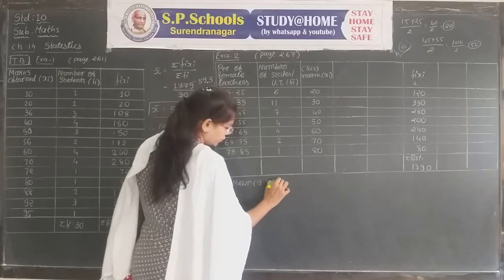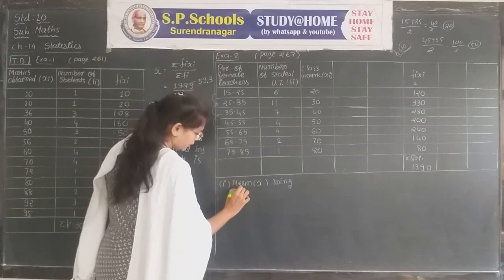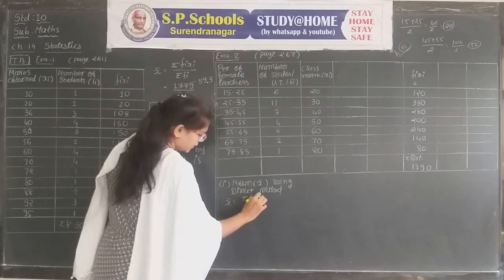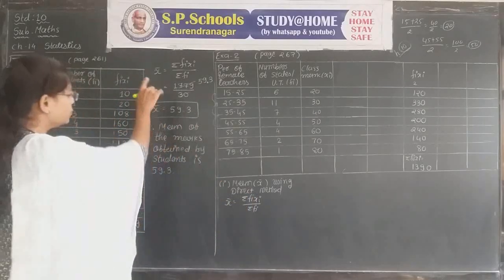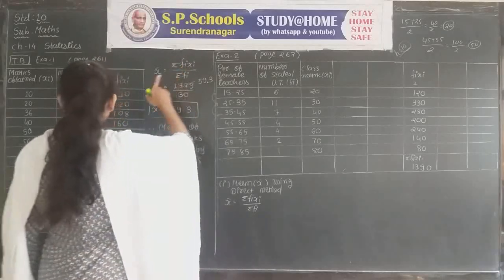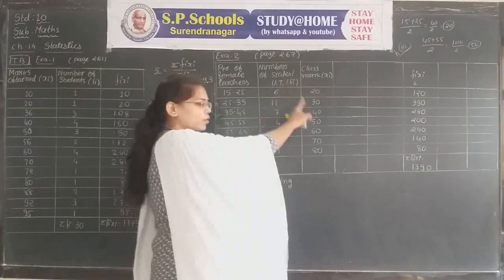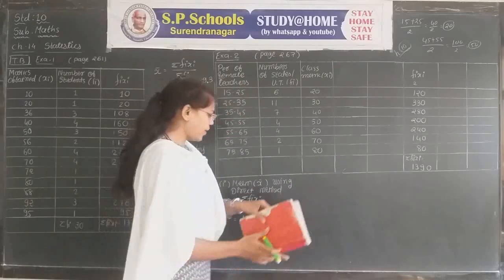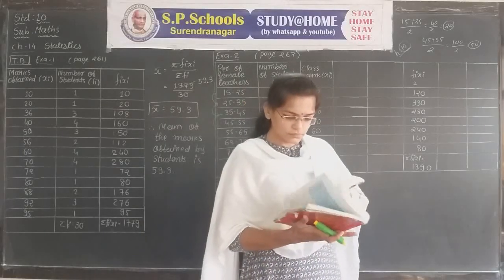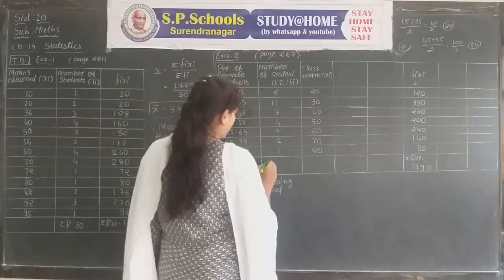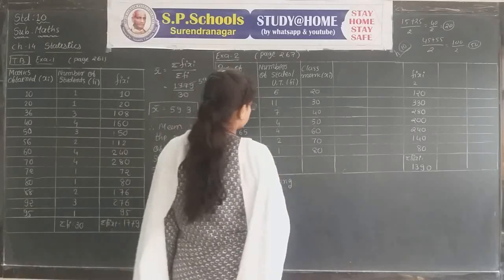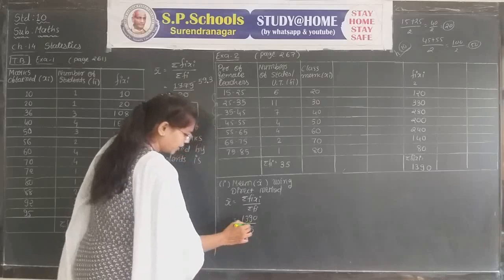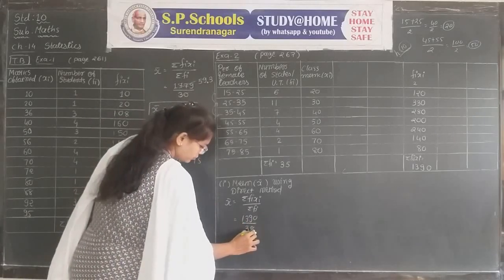Now we solve the mean using the direct method. x̄ = Σfi·xi / Σfi. Note: here xi is the class mark for class intervals (unlike ungrouped data where xi is the value of observation). Substituting: Σfi·xi = 1390. Σfi is not given directly, so we add the frequencies. Σfi = 35. So x̄ = 1390 / 35.